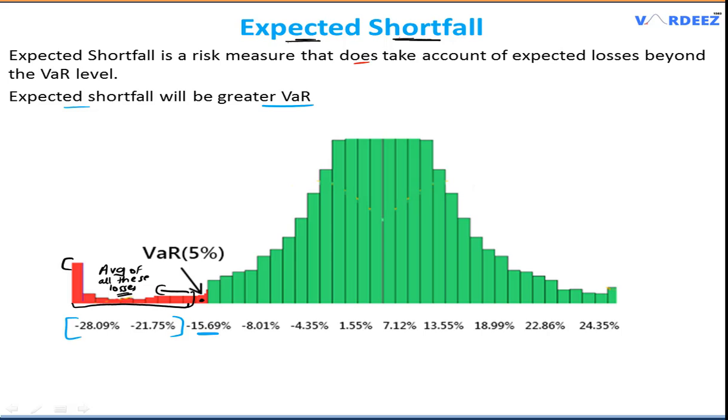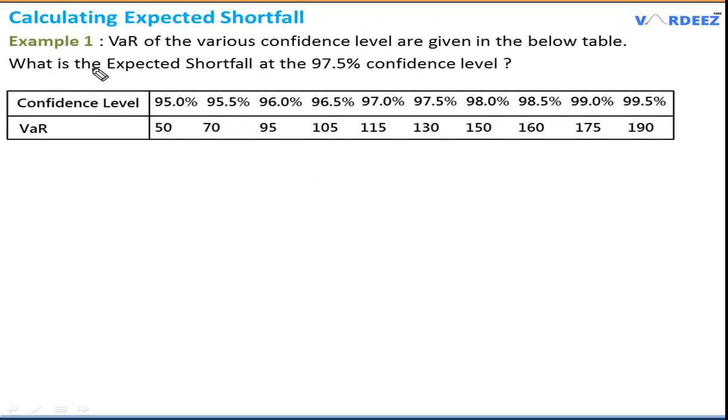Let's solve two questions related to expected shortfall. Example one: VAR at various confidence levels are given in the table. What is the expected shortfall at 97.5% confidence level? As you can see, I'm given the confidence levels and associated VARs for each. I want to find the expected shortfall at 97.5%, so all confidence levels below 97.5%